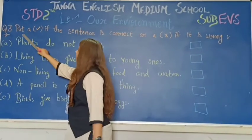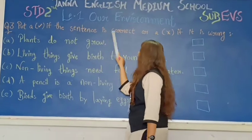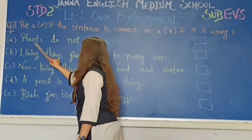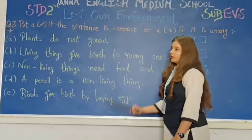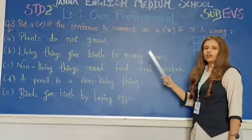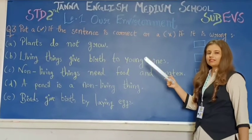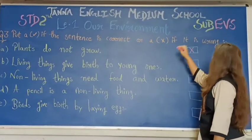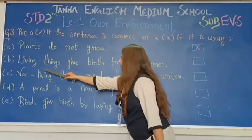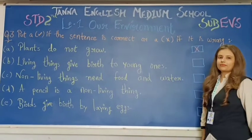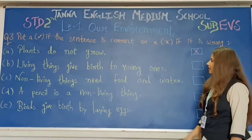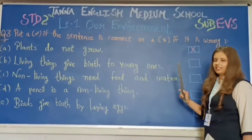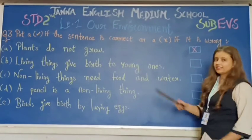Question number three: put a right tick if the sentence is correct or a wrong if it is wrong. Our first question is: plants do not grow. Students, is it right or wrong? Plants do not grow — of course, wrong. Why? Because plants are living things, so they can grow. What is your answer? Wrong. Next question: living things give birth to young ones. Is it right or wrong? Of course it is right. Why? Because only living things can give birth to young ones. Non-living things cannot give birth to young ones. So your answer is right.